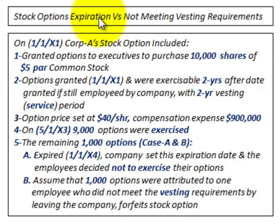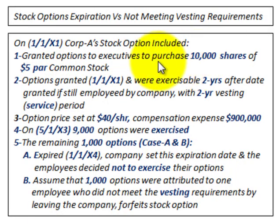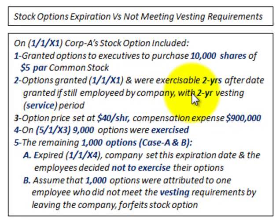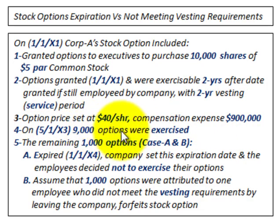We're going to look at stock options expiration versus not meeting the vesting requirements and how we handle these entries. For example, on 11x1 Corporation's stock options: options were granted to executives to purchase 10,000 shares of $5 common stock in 11x1, executable two years after the grant date if the employee was still working at the company — a two-year vesting service period. The remaining 1,000 options will be split into Case A and Case B.